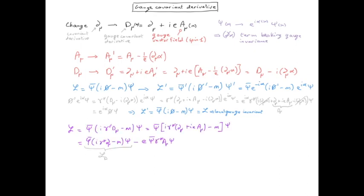We recognize that in addition to the Dirac Lagrangian we now have a term which couples the fermionic field with the gauge vector field A mu and this is nothing else but the QED interaction Lagrangian.